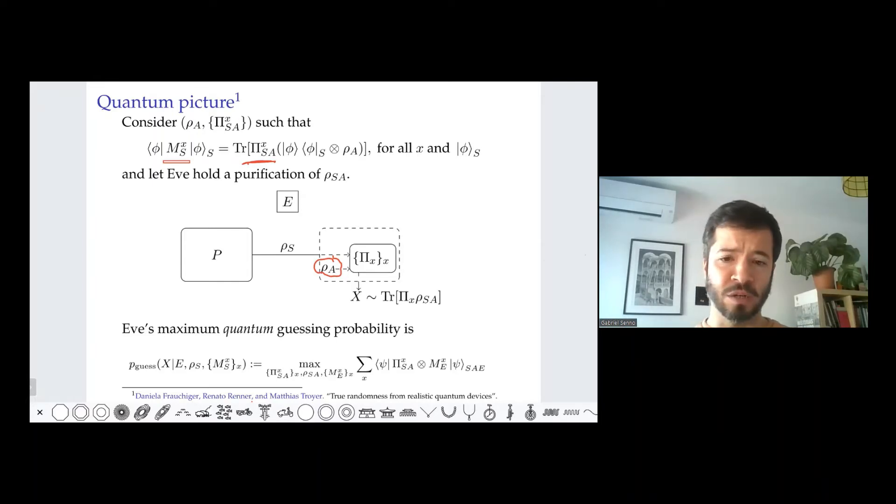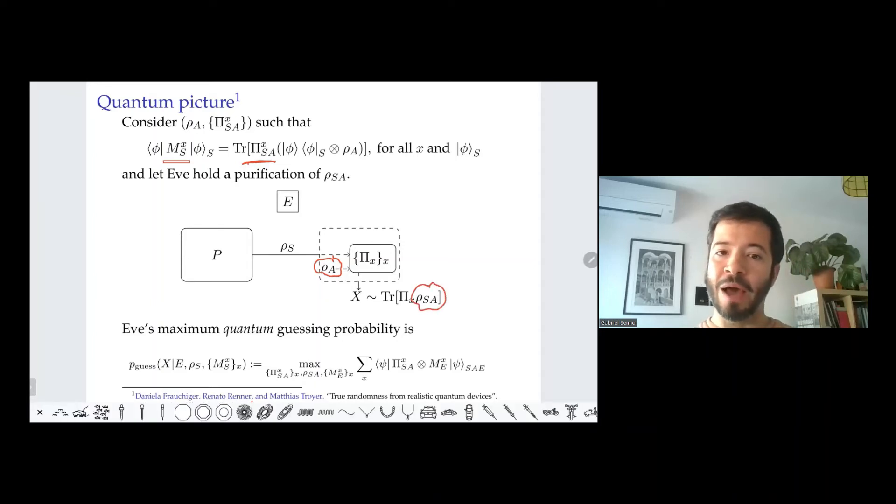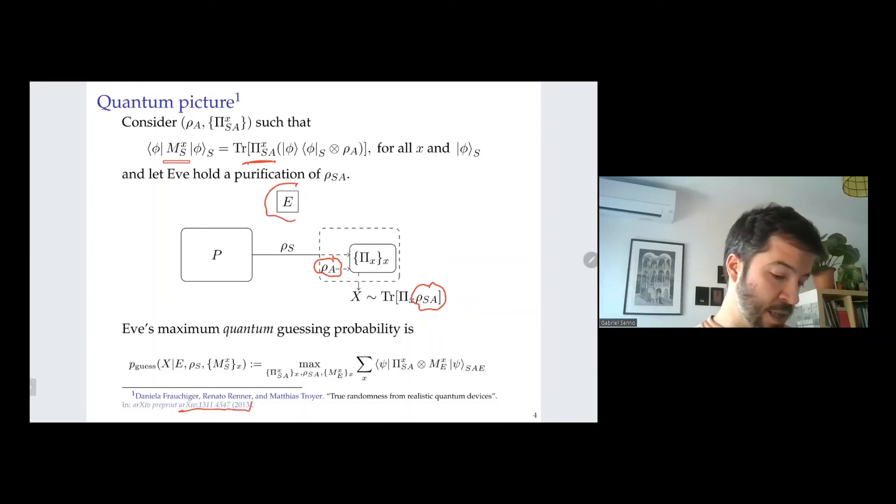So the correlations between the adversary and the measurement, they are modeled by letting her have a purification of the ancillary system. But in our settings, since we are also considering correlations with the state, we would let her have a purification of the joint state of the system and the ancillary, which we are allowing to be non-product. We are allowing there to be correlation between the system and the ancillary, which has as the reduced state on S to be rho_s and the reduced state on A together with the projected measurement to reproduce the statistics of the POVM M on system S. Okay, so with this system E purifying S and A in her possession, what she does is look for the measurement that maximizes the correlation between its outcome and the outcome of S and A.